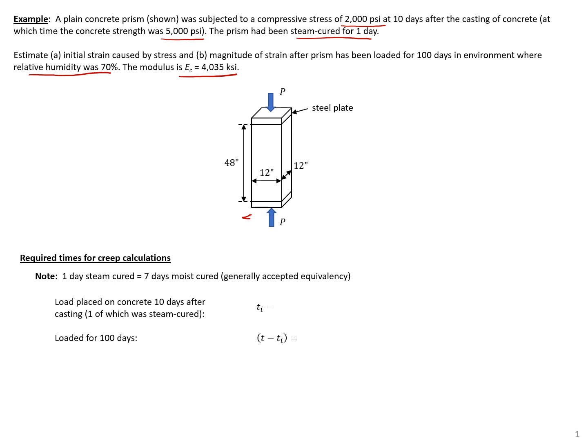The first thing we need to do is calculate our required times for our creep calculations. The load was placed on the concrete 10 days after casting, and one of those days was steam cured. We'll assume that one day of steam curing equals about seven days of moist curing. So our TI, the time at which the load is placed, is nine days of no curing plus one day of steam curing times the conversion factor of seven days moist curing. So we'll assume TI is 16 days.